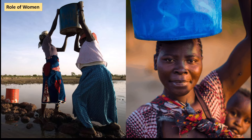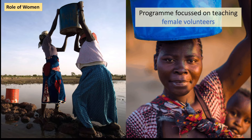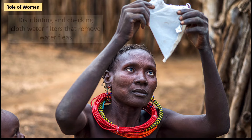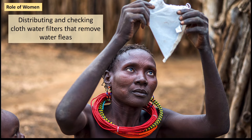The Ghana Red Cross focused on teaching female volunteers in these villages skills to help eradicate the disease. They had tried this with men in the past, but found that men didn't spend that much time in the village with the water sources. It was the women who were the gatekeepers — they sourced the water, saw that it was distributed, and had the most contact with it. Women were getting water from ponds, lakes, or rivers, so they knew the most about it. When they tried it with men it wasn't as effective, so making women responsible was the real key to this success. The women distributed and checked cloth water filters — literally a piece of cloth put over a bucket so that as you pour the water through it, it stops all the water fleas from getting inside.